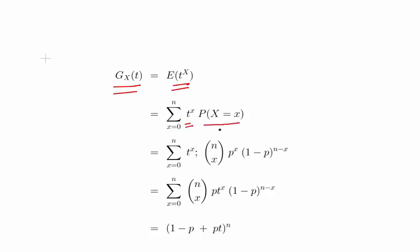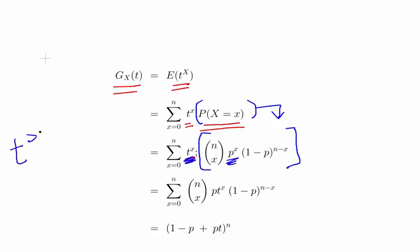Here we have t to the power of x and the probability of x equals each particular value. What we are going to do is split it up: here we have t to the power of x and this is the probability mass function for a binomial distribution. So t to the power of x times p to the power of x can be rewritten as pt to the power of x. That's what we have there.